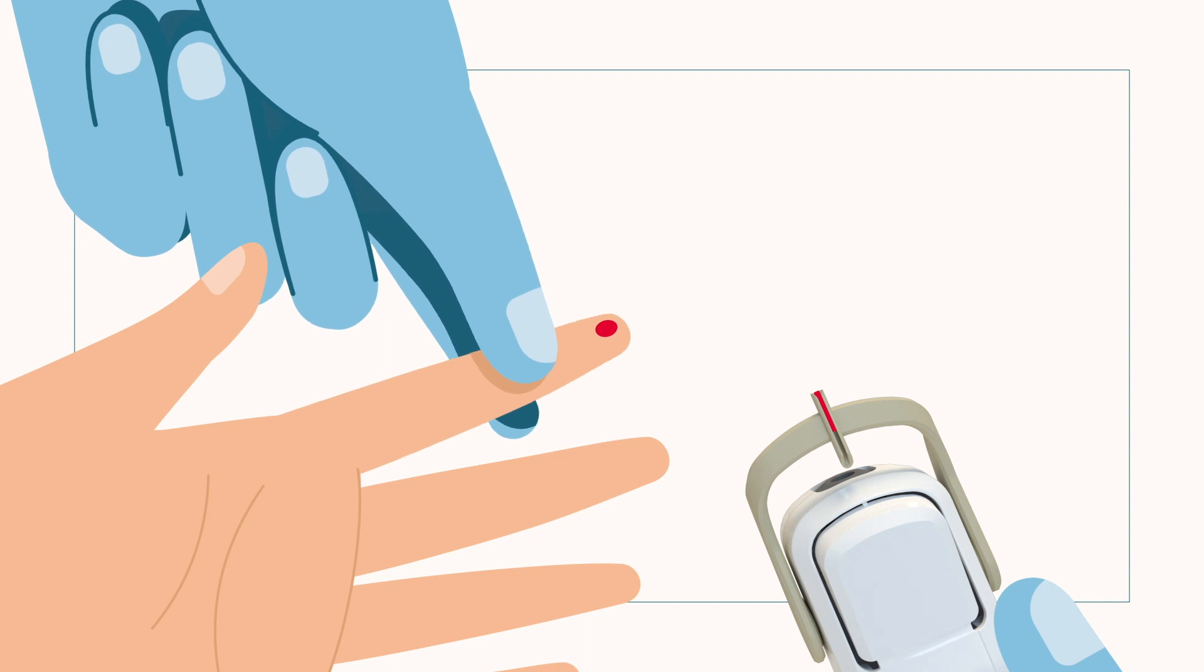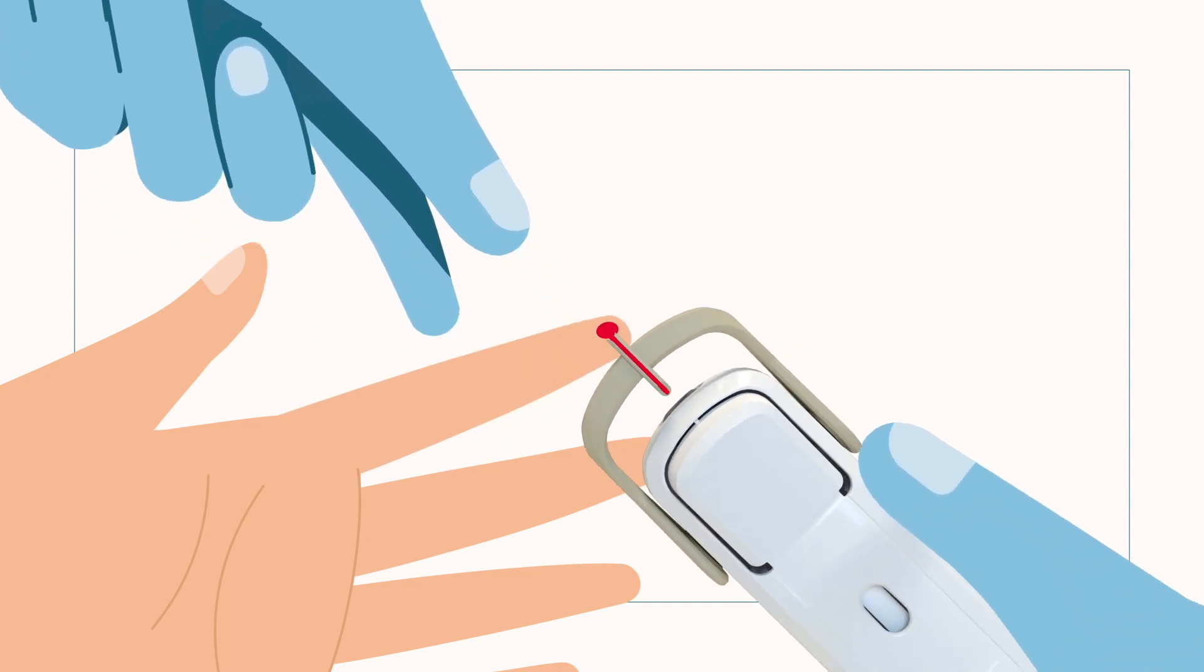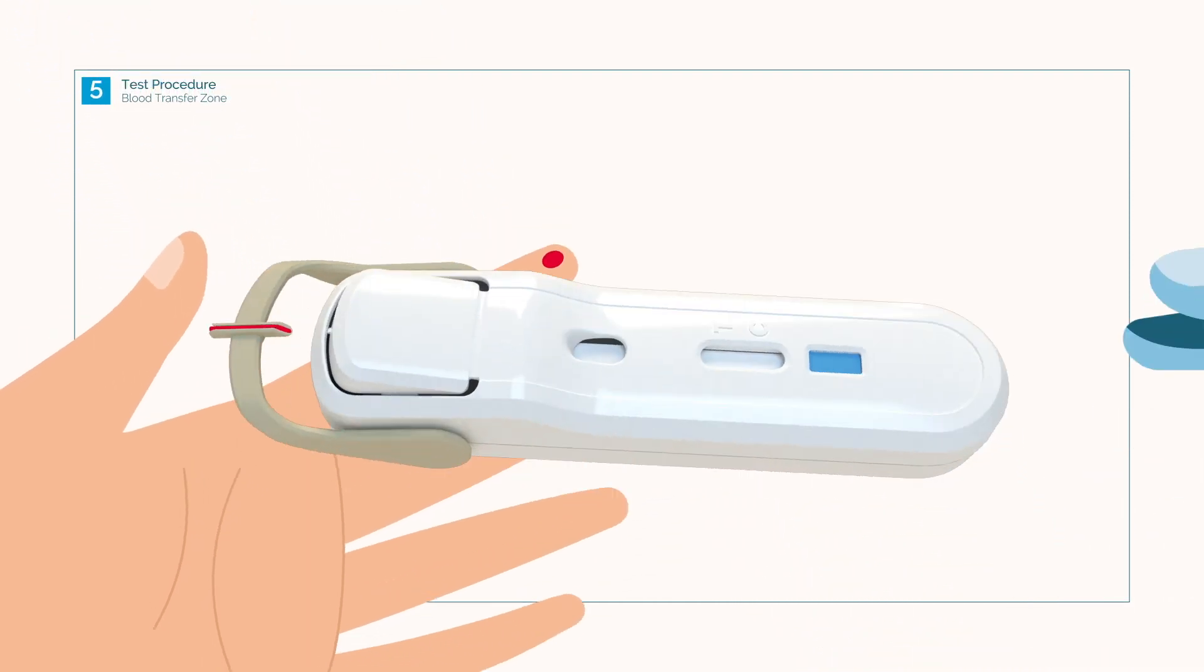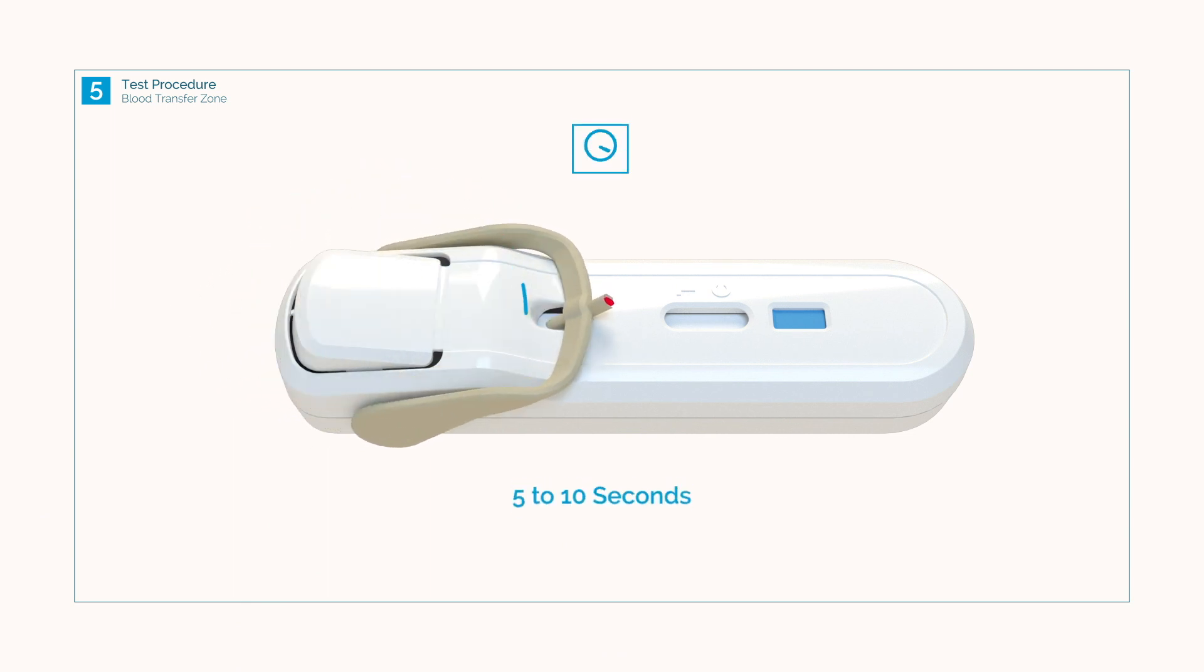If necessary, gently squeeze the finger to reach the required 5 microliters. Next, rotate the tube over to the blood transfer zone.